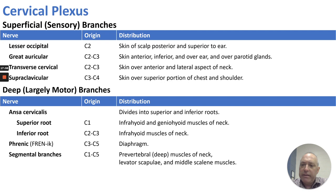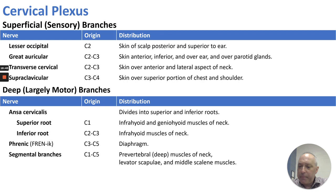The lesser occipital nerve originates from C2 and distributes to the skin of the scalp posterior and superior to the ear. The greater auricular nerve covers over the ear. The transverse cervical covers the skin over the anterior and lateral aspects of the neck. The supraclavicular covers skin over the superior portion of the chest and shoulder. Deep motor branches include the ansa cervicalis, which divides into the superior root (C1, supplying infrahyoid and geniohyoid muscles) and inferior root (C2 and C3, supplying infrahyoid muscles). The phrenic nerve supplies the diaphragm, and segmental branches supply prevertebral muscles like levator scapulae and middle scalene.